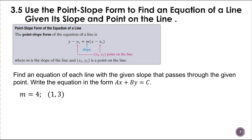Hi, this is the second video for section 3.5. In this example we're going to write the equation of a line given the slope and a point on that line. We're going to use the point-slope form of an equation to write this equation.